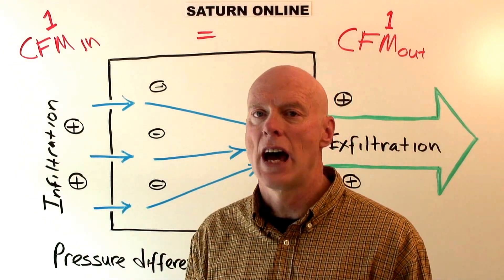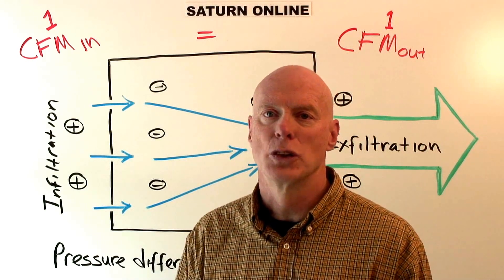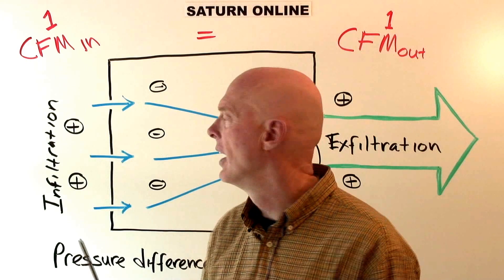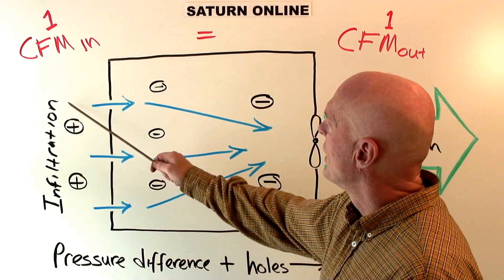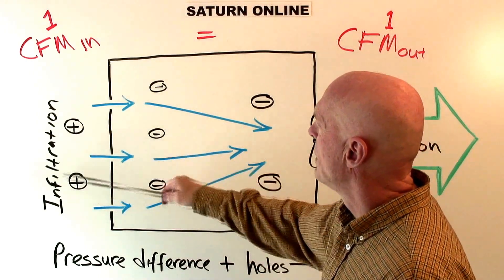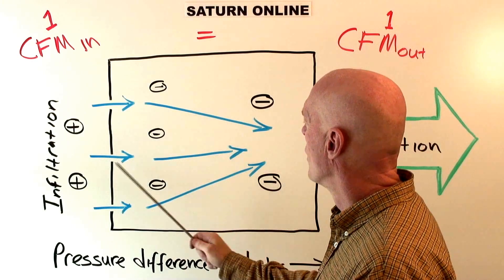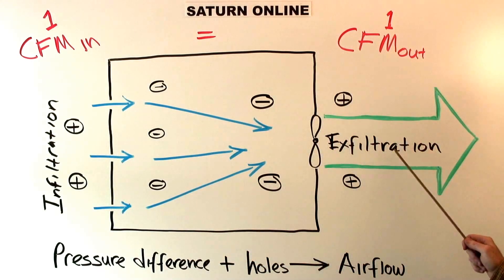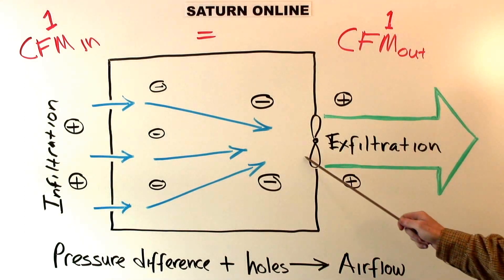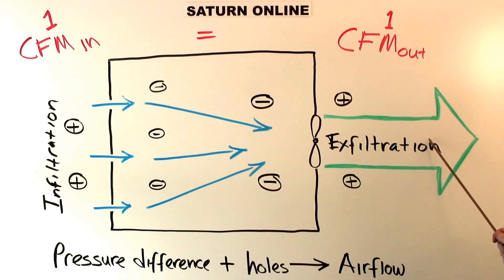So we have exfiltration and we have infiltration. In buildings, we at Saturn normally refer to this as air leakage — we don't care if it's going out or going in really. But in this example, it's good to note that the air coming in is called infiltration: the air infiltrates the box. And over here we have exfiltration, where the fan is forcing air out, causing exfiltration on this side.